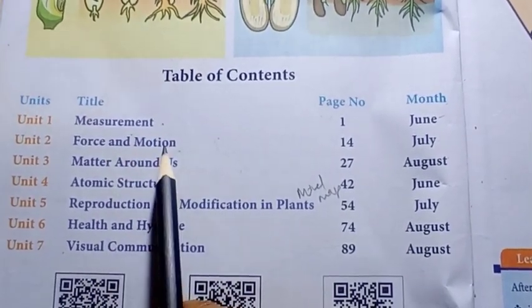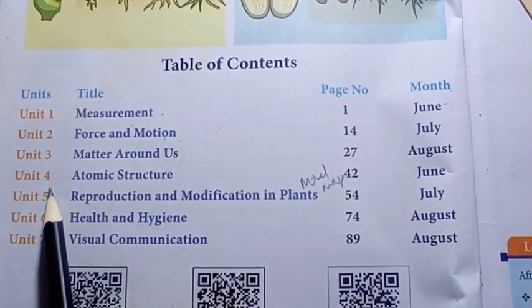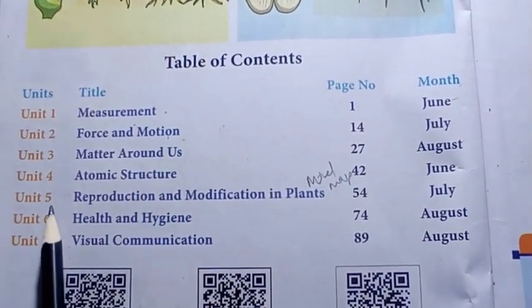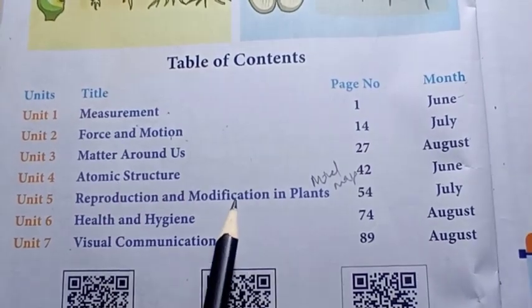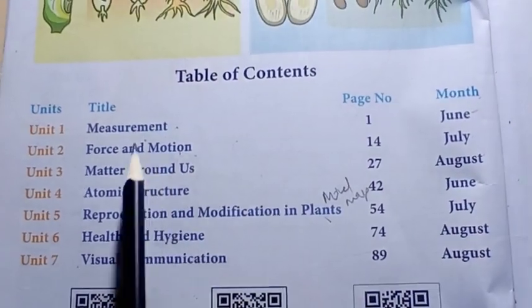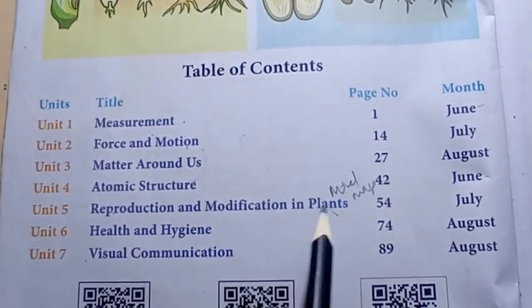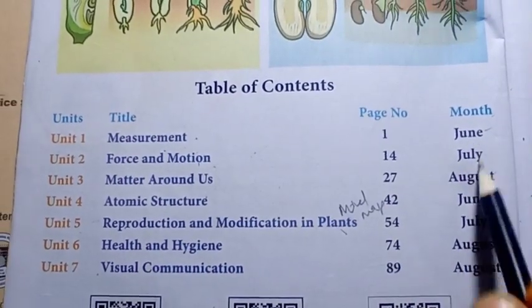We'll cover Force and Motion Unit 2, then Unit 4 Atomic Structure, then Reproduction and Modification in Plants. So measurement, force and motion, atomic structure, reproduction and modification in plants - four lessons in total.